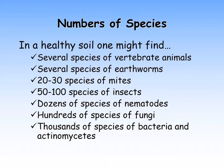So the logical question to ask is: how diverse are these microbes, and how many might be found in a single soil? In a healthy soil we expect to find several species of vertebrate animals like snakes and mice, several species of earthworms, 20 to 30 species of mites, perhaps 50 to 100 or more species of insects, dozens of species of nematodes, hundreds of species of fungi, and thousands of species of bacteria and actinomycetes — perhaps as many as 5,000 species in a teaspoon of soil. That gives you an idea of how diverse microorganisms can be in the soil.